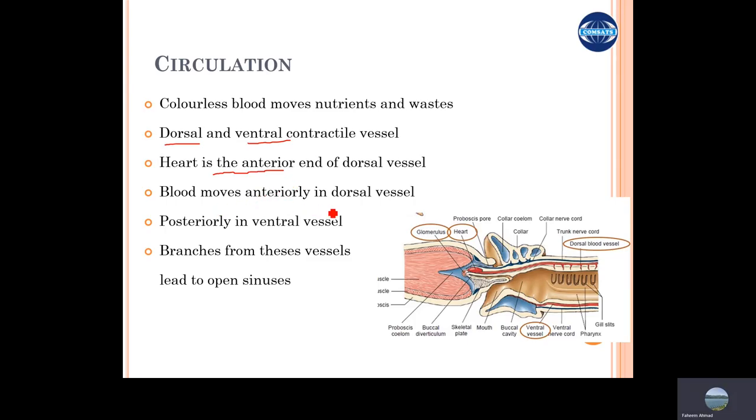The blood moves from the posterior side to the anterior side. This animal has the proboscis here, so this is the anterior side. In the dorsal blood vessel, the blood moves from the anal region towards the heart or towards the proboscis region.